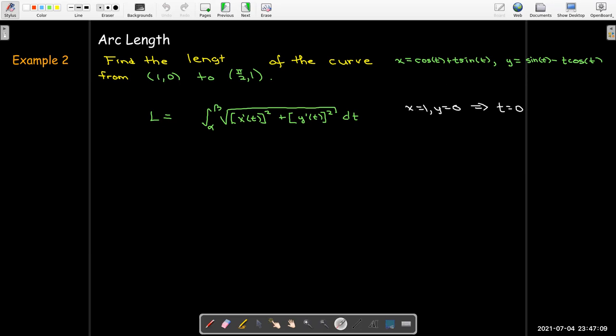So just from observation, when t equals 0, I can see that x will be 1 and y is going to be 0. And when x equals pi over 2 and y equals 1, well in order to get x equals pi over 2, I could have t equals pi over 2 because I'd have pi over 2 times 1. And sine of pi over 2 is 1 and then cosine of pi over 2 is 0. So my bounds go from 0 to pi over 2.